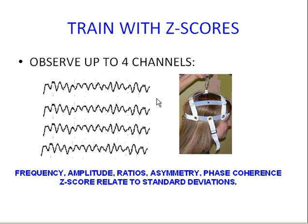We were then ready to train with four-channel Z-score training using the mini-DZ cap. When we used Z-score training, we could train with such metrics as frequency, amplitude, ratios, asymmetry, coherence, and phase — all of them relating to Z-score training.